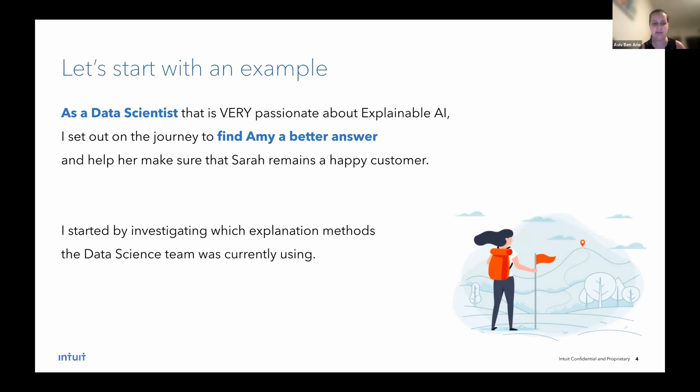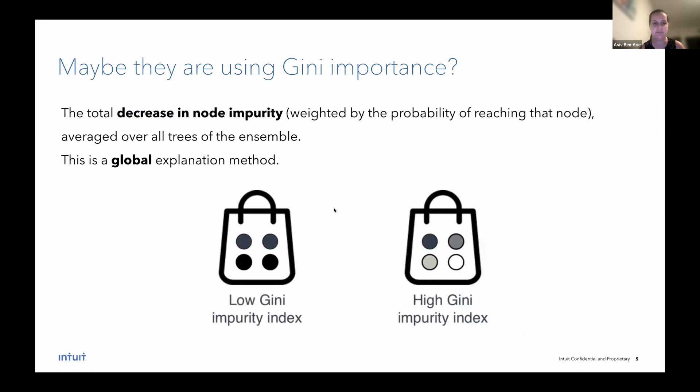As a data scientist that is very passionate about explainable AI, I set out on the journey to help find Amy a better answer and help her make sure that Sarah remains a happy customer. I started by investigating which explanation methods the data science team was currently using. So maybe they were using Gini importance. Gini importance is a popular method used to explain the importance of features in tree-based models such as random forest and XGBoost. Gini is based on the total decrease in node impurity.